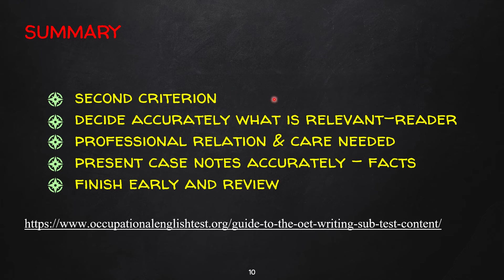Let me summarize. This is the second criterion of the OET writing assessment. You have to decide accurately what is relevant for the reader so they can give appropriate care to the patients. You have to know the professional relationship between the reader and the patient so you can include relevant information. Present case notes accurately using only the facts given — do not include your own ideas. Try to finish early and review your letter again.